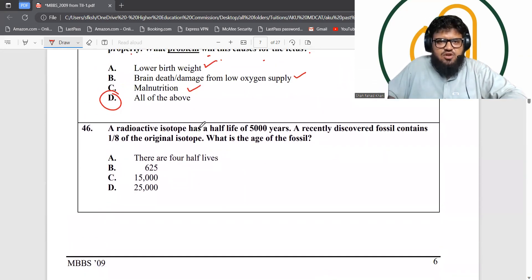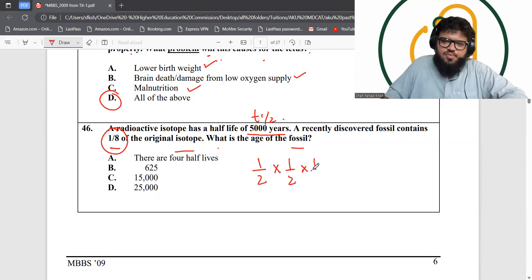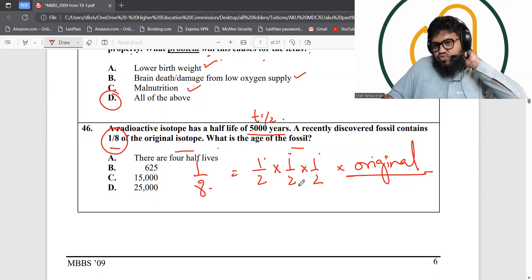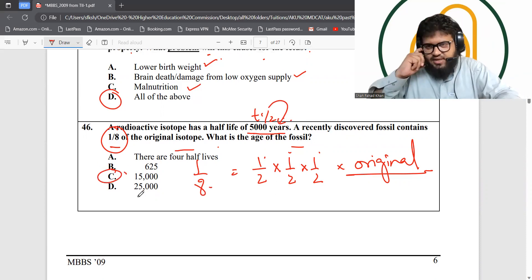Moving on to question 46. A radioactive isotope has a half-life of 5,000 years. A recently discovered fossil contains one-eighth of the original isotope. What's the age of the fossil? One-eighth of the original would mean one-half times one-half times one-half. Which means three half-lives have already passed because all three equals one over eight. Two times two is four, times two is eight. Three half-lives have passed. One half-life is 5,000 years, so three half-lives would be 15,000 years. Option C is the best answer.